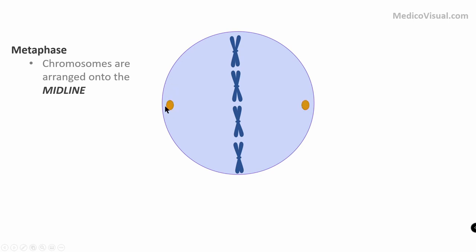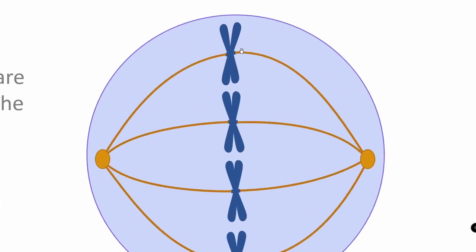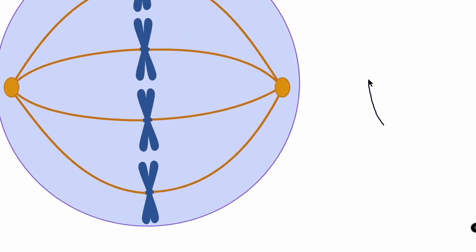There are special organelles called centrosomes, and from centrosomes special fibers originate — called spindle fibers — which attach to the chromosome at the centromere region. Not exactly at the centromere, but at a specific protein located there called the kinetochore. These spindle fibers are hooked to the kinetochore.